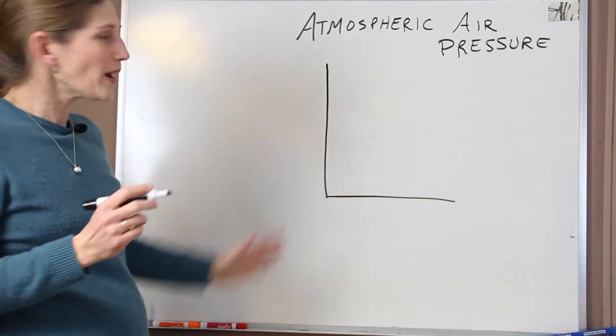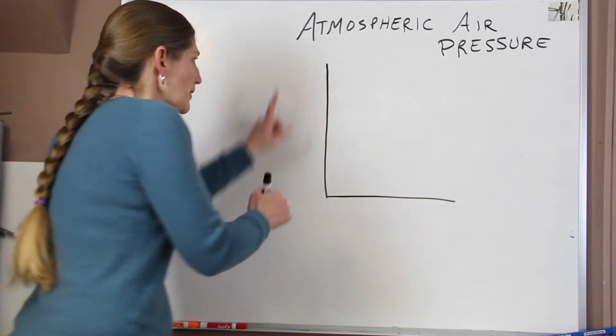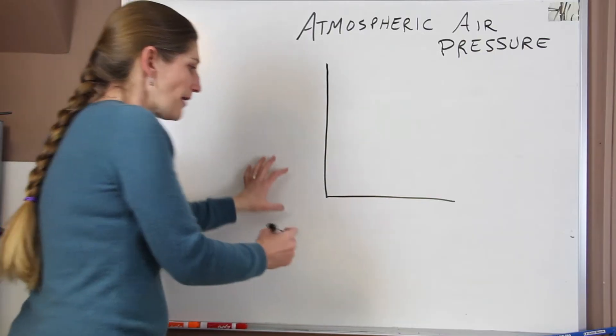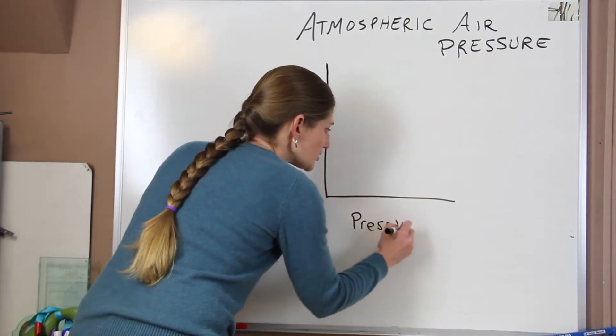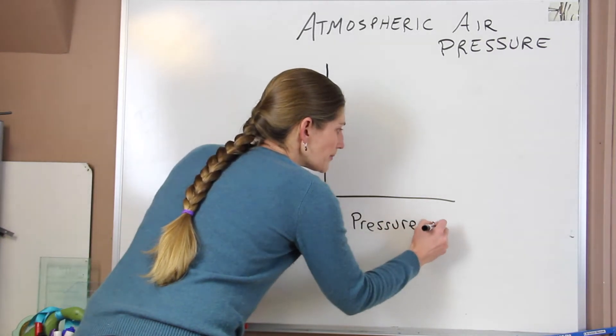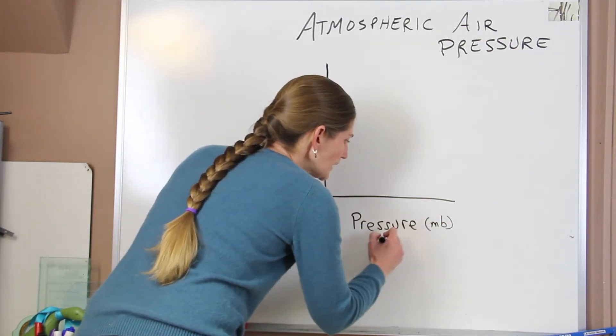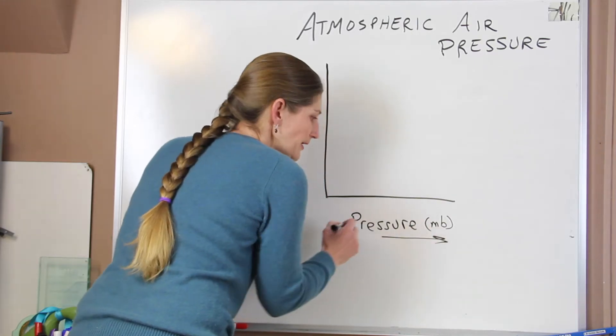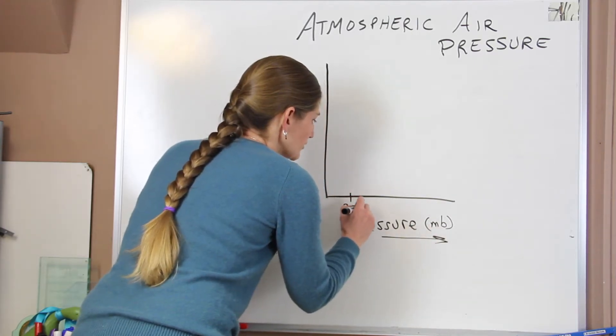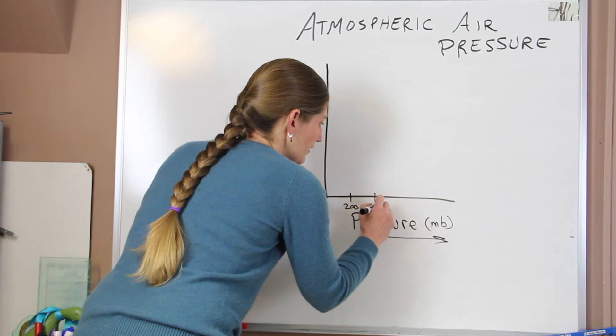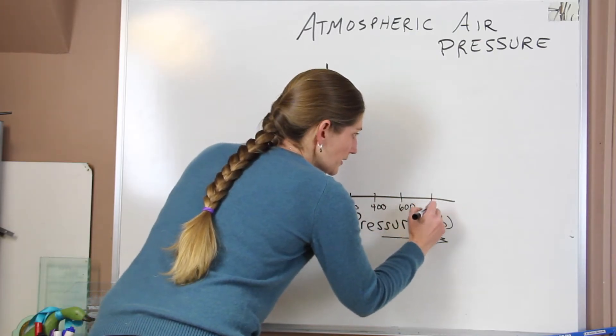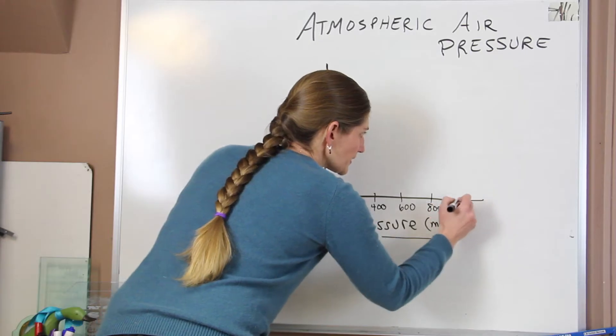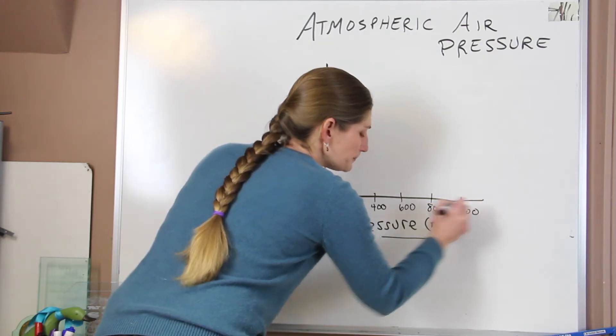So long story short, what is the pattern that we start to see? I've just drawn a simple graph up here. We're going to have pressure on the bottom. This is just our air pressure, and we're going to be measuring it in millibars. And it's going to increase from left to right. So just for some values, we can put 200, 400, 600, 800, and a little more and 1000.